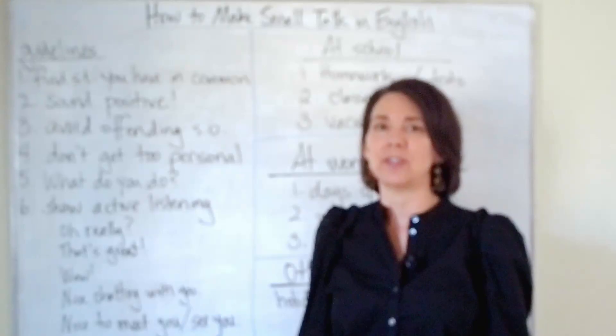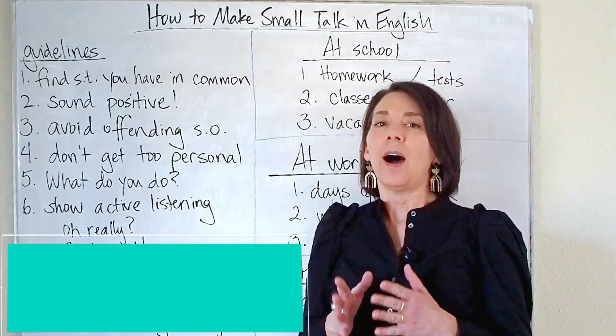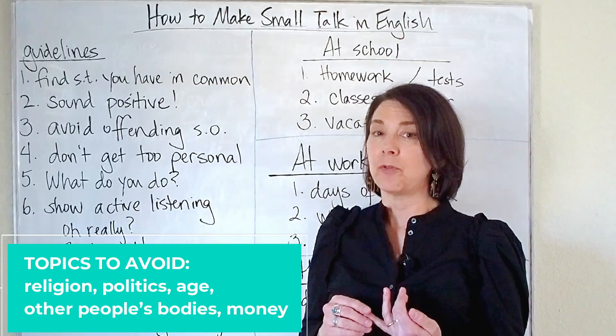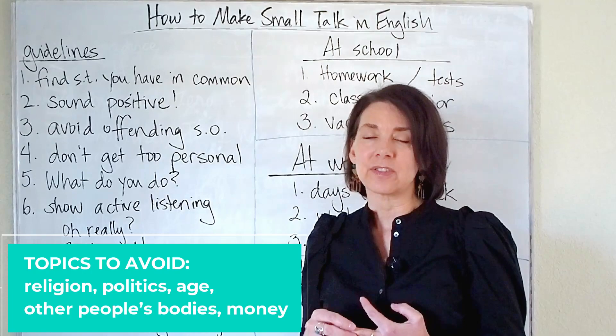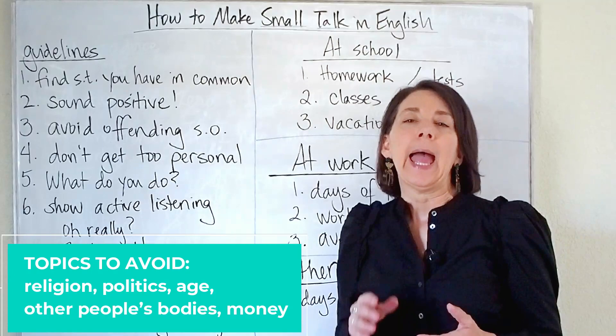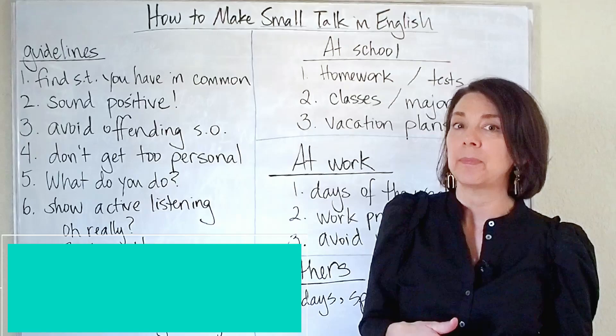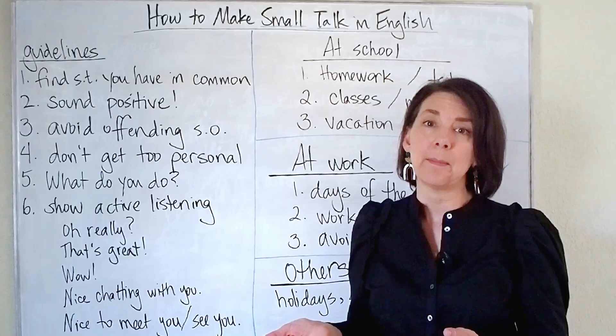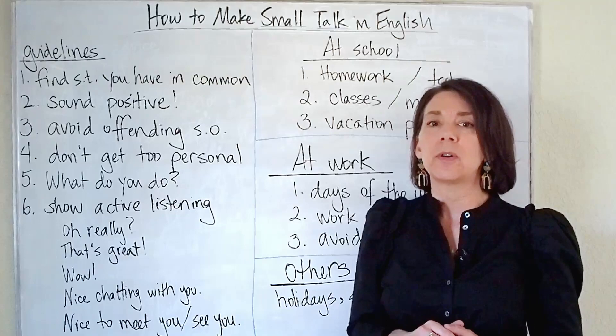Number four: don't get too personal. We have some topics that we avoid talking about unless the person is a very close friend or family member. We avoid religion, politics, age — we don't ask someone how old they are or make comments about how old the person looks. Weight — we don't talk about other people's bodies. And money — we don't ask how much someone paid for something, how much their house or car cost, or how much money they make. Money and those other topics are considered taboo, and are not appropriate for small talk.